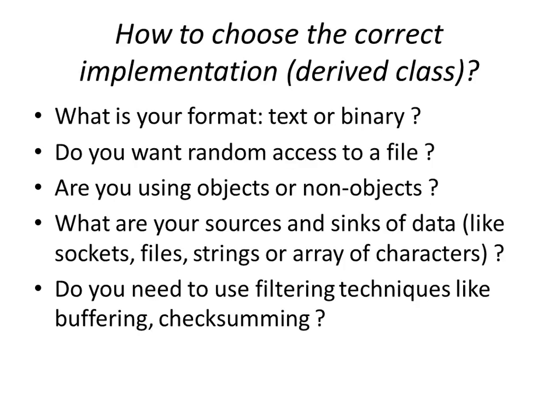With a large number of derived classes, how do you choose the correct implementation? The questions you need to ask yourself are: What is the format of the file — is it text or binary? Do you want to access the file in a random access fashion? Are you using objects or primitive types? And what are your sources and sinks of data? When you read and write, it may not just be files — it could be sockets, strings, or an array of characters.